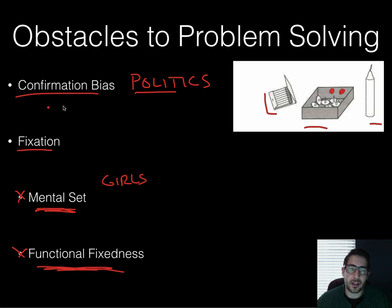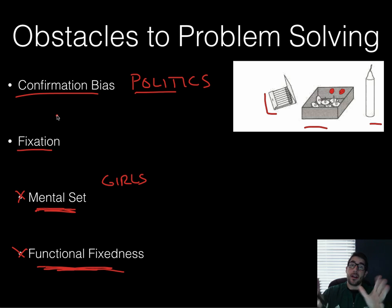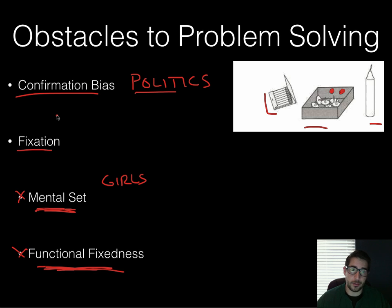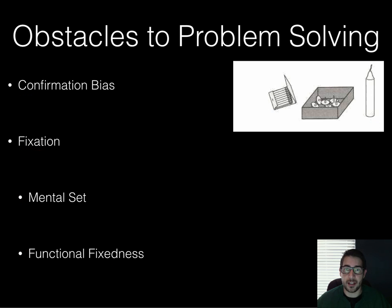Another example of confirmation bias: in Iraq, we had the weapons of mass destruction — that's why we went in and invaded Iraq. Even after it was proven that they didn't have weapons of mass destruction, or we couldn't find any, we kept looking for reasons: 'They could have had it, yeah, they could have had it.' That's confirmation bias.